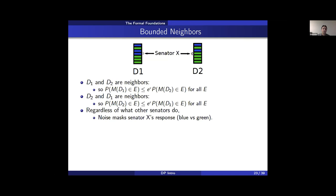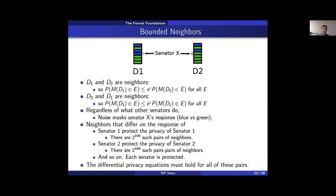We have to consider all pairs of neighbors, so the differential privacy equations are applied to neighbors that differ on Senator 1 to protect Senator 1, neighbors that differ on Senator 2 to protect Senator 2, and so on. If you counted the full set of neighbor pairs for 100 senators, you would see that there are 2 to the 100 such possible neighbors — which is why it's important to know how to construct these algorithms, covered in a later talk.